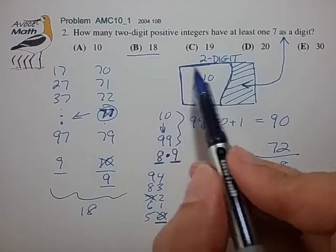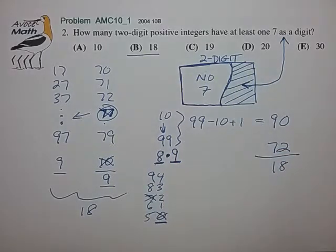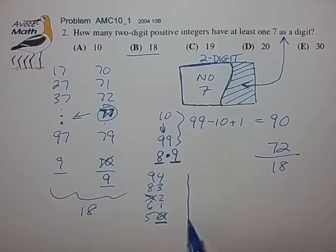But we notice is that if we expand this problem to three digits, our second counting method actually is no more difficult for three digits than it is for two digits. So let's see what that might look like.